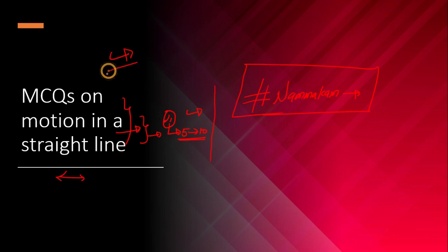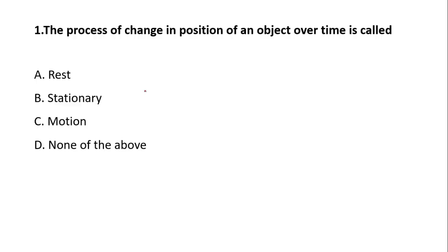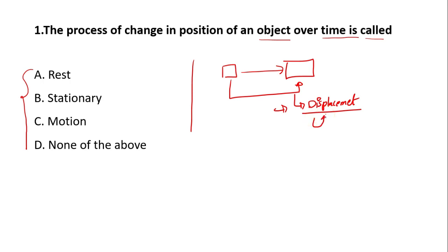Please share with your friends so they can also get benefits. First question: the process of change in position of an object over time is called what? When any object is moving from this point to another point, it means that it has certain displacement, right? Displacement means there will be motion. Motion means there will be displacement. So the process of change in position of any object over time is called option C, that is motion.